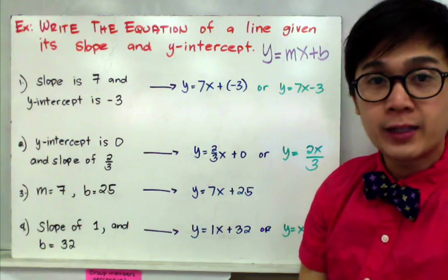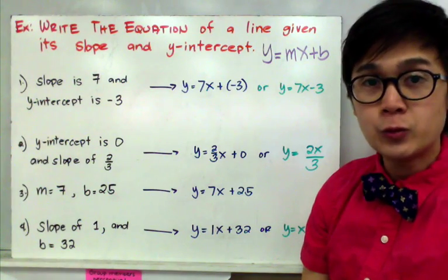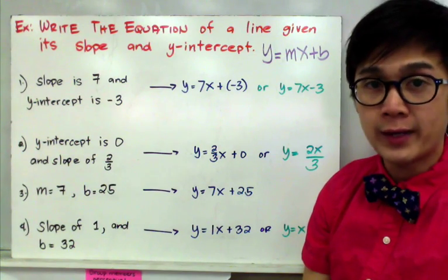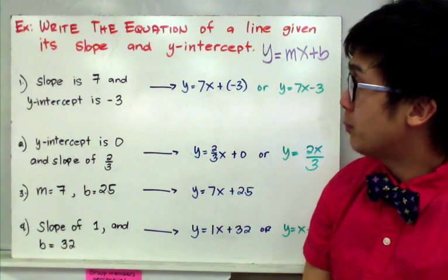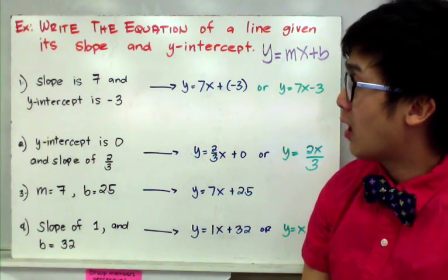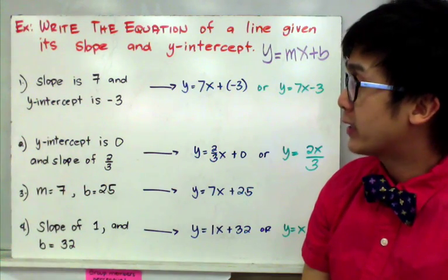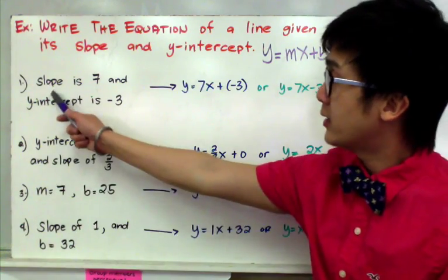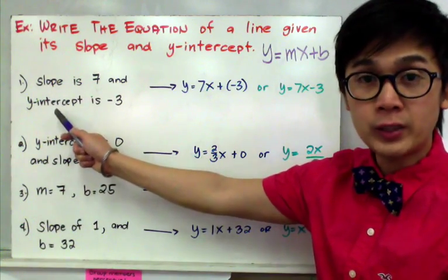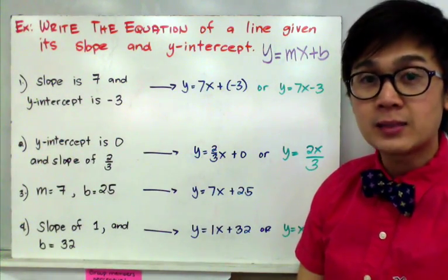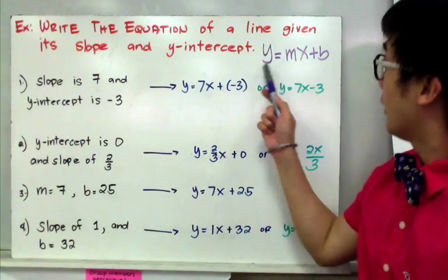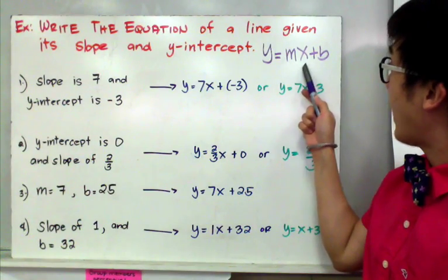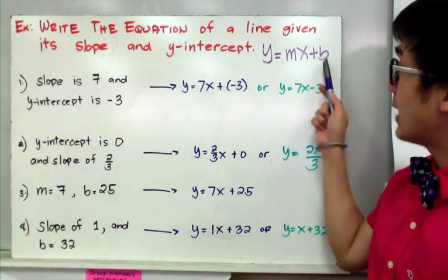Let's start writing an equation of a line given the two important parts: the slope and the y-intercept. For example number one, we have a slope of 7 and a y-intercept of negative 3. All we need to do is write the equation of a line in slope-intercept form, where m is with x and b is your y-intercept.